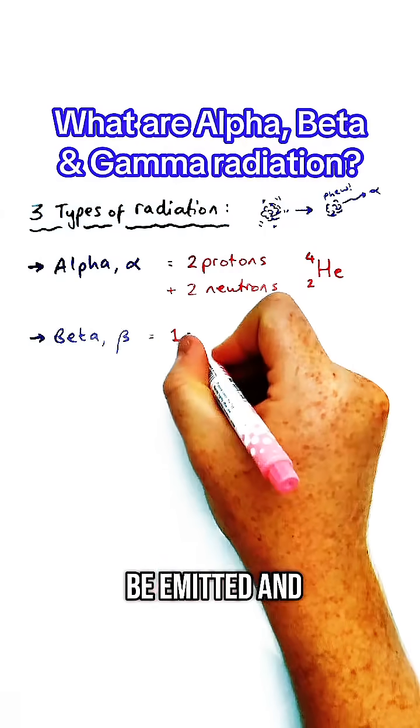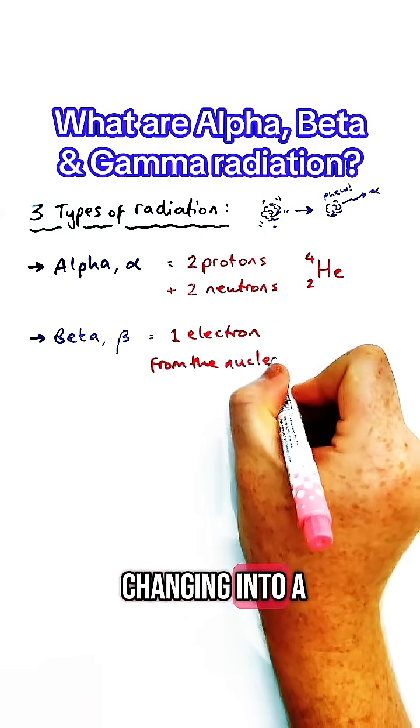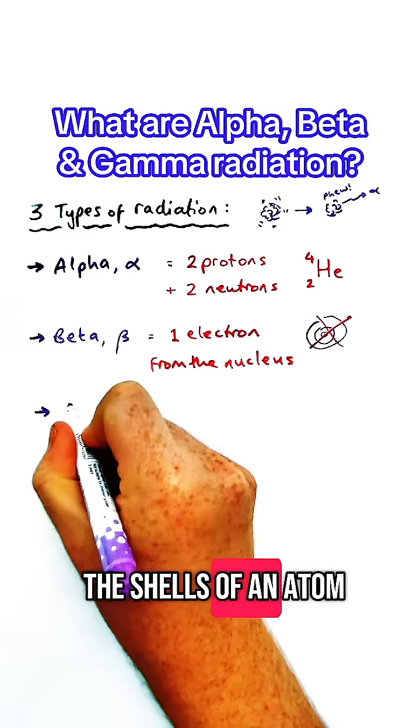Beta particles could be emitted, and these are fast-moving electrons. They are caused by a neutron changing into a proton inside the nucleus, not emitted from the shells of an atom.